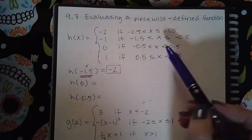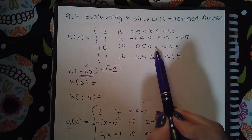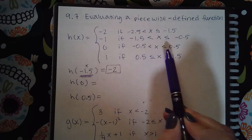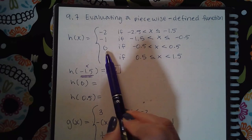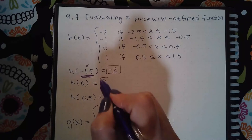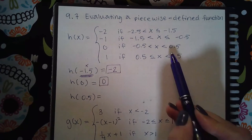Now for 0, 0 would be here, 0 would be between negative 0.5 and positive 0.5, and so the y value that I'm going to choose this time is actually 0.